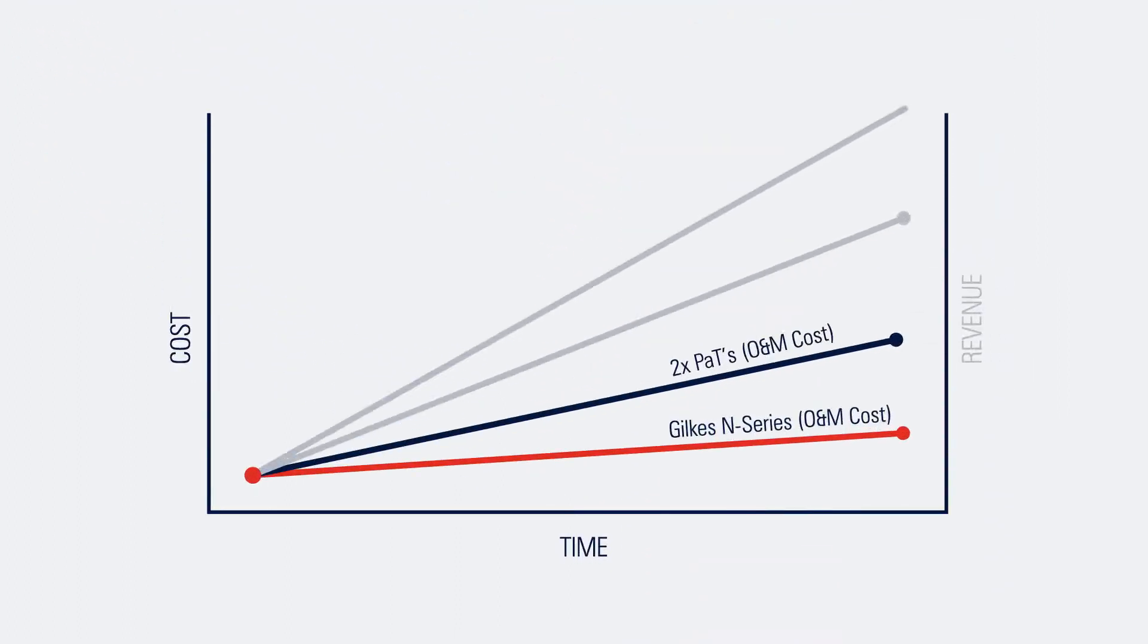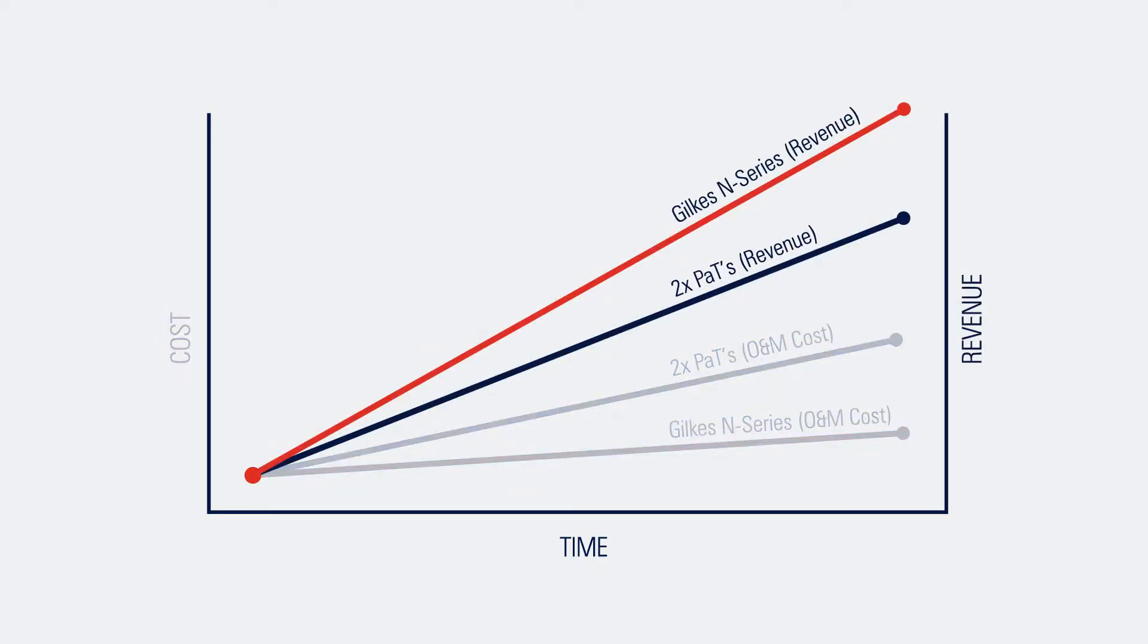Reductions in operation and maintenance costs, coupled with increased revenues from higher outputs, results in lower total cost of ownership over the lifetime of the asset.